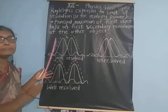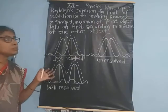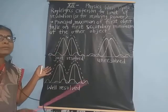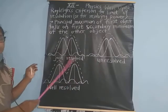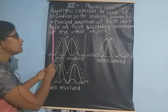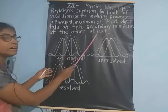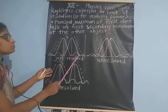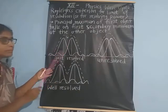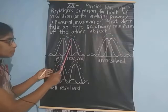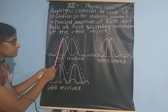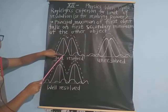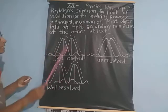We will see the Rayleigh's criteria for limit of resolution. The resolving power depends upon the diffraction patterns produced by the optical instrument for two objects which are going to be resolved. According to this criteria, the principal maximum of the first object falls on the first secondary minimum of the other object. We will understand this criteria using a figure. Two diffraction patterns produced by two different objects are shown. There are two principal maximas or central maxima of two objects.